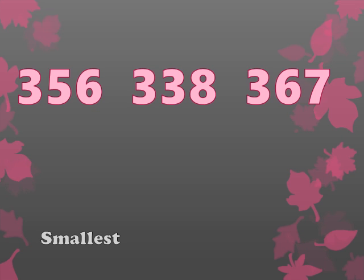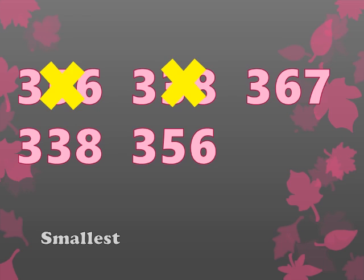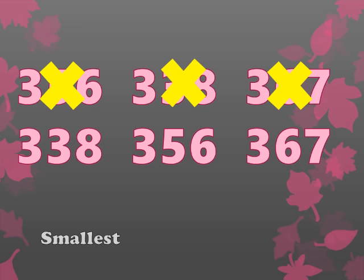In the first number the tens digit is five, in the second it's three, and in the third it's six. As you know, three is the smallest among five and six, so 338 is the smallest — cross out 338 and write it first. Now compare 356 and 367: the tens digit is five in 356 and six in 367. Since five is smaller than six, 356 is smaller than 367 — cross out 356 and write it, then cross out 367 and write it. We have arranged the numbers from smallest to greatest.